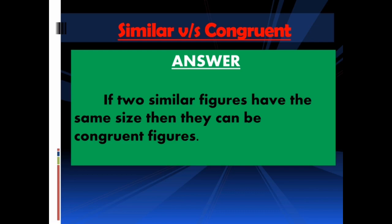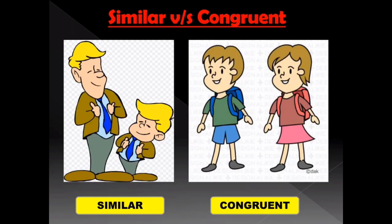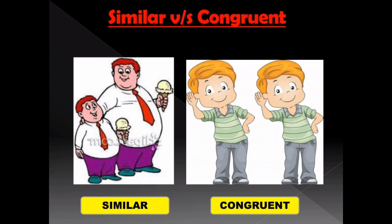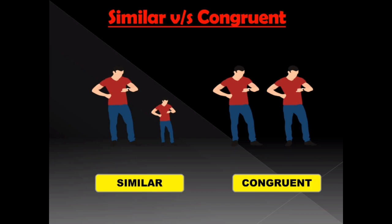Hoping you are correct. Now we are going for more examples to understand the difference between similarity and congruency. On the left you can see a father and a son who are similar, and on the right a brother and sister who look alike — an example of congruency. Here is another picture: a father and a son who are similar are on the left of the screen, and on the right two brothers who are alike are examples of congruency.